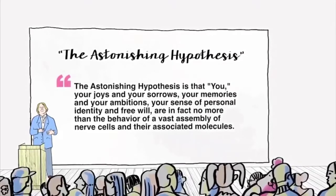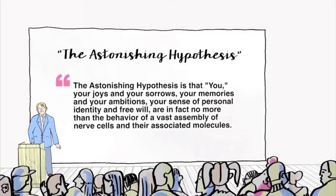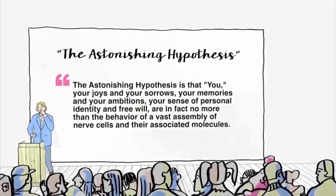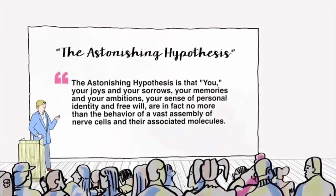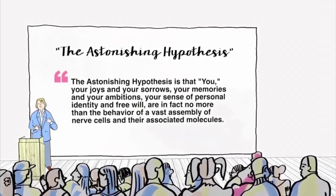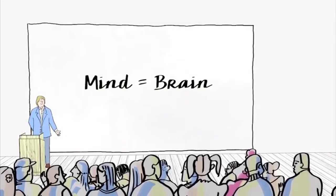are in fact no more than the behavior of a vast assembly of nerve cells and their associated molecules. Now, this assembly of nerve cells is of course the brain, the brain and parts of the spinal cord, but we are going to talk about the brain here.